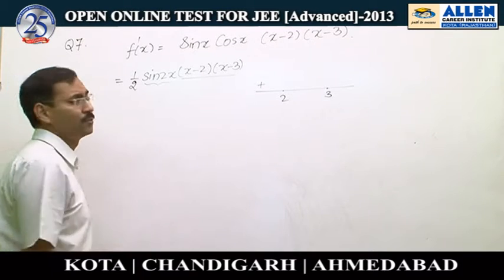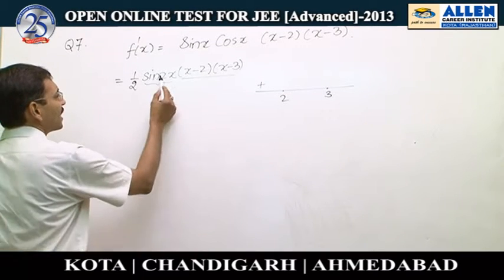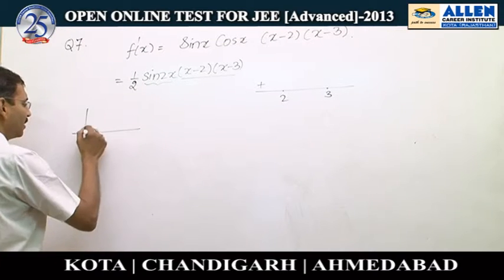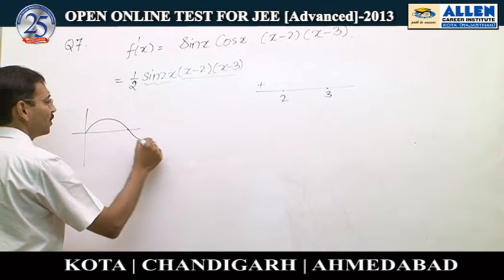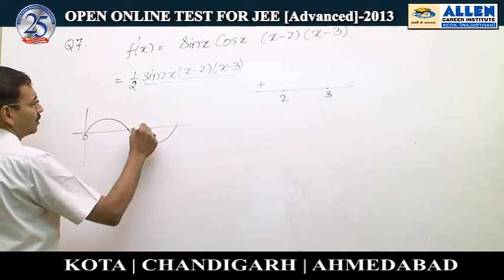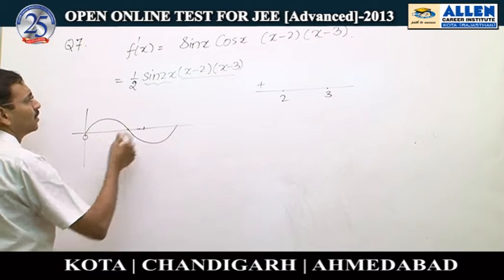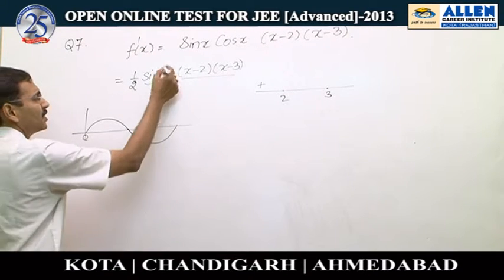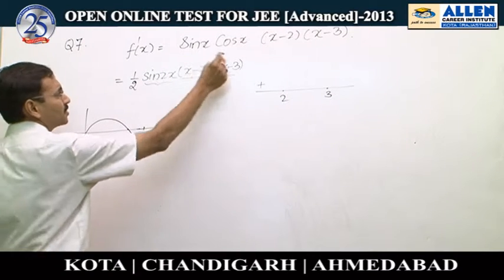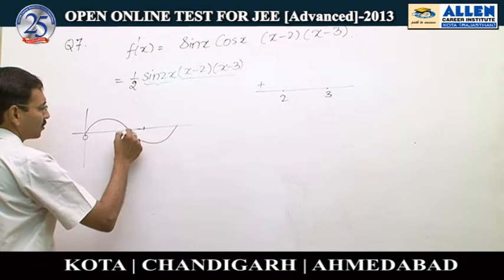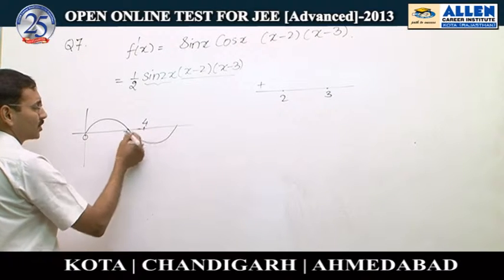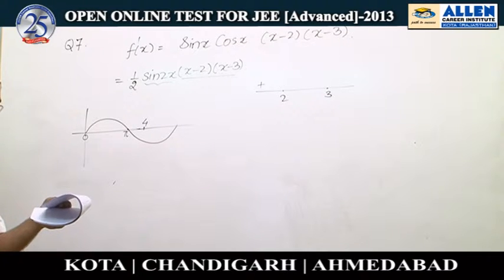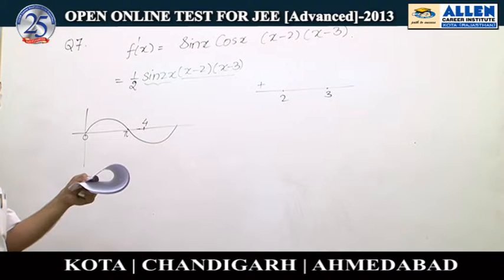In 0 to 2, the angle 2x ranges from 0 to 4. In 0 to π, sin(2x) is positive, but what about π to 4? If 2x is from π to 4, then sin(2x) is negative, so overall it will be negative. So this is again a wrong option. We have to verify each and every option.